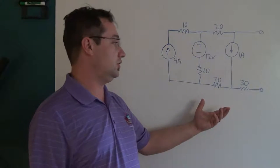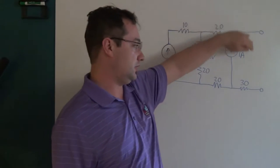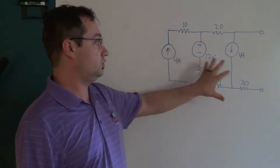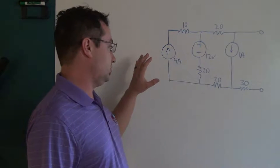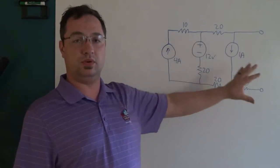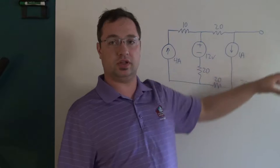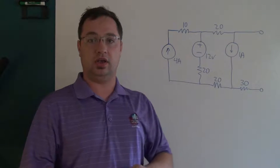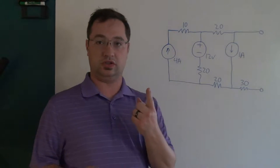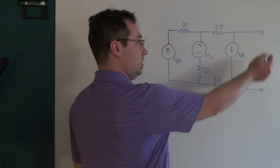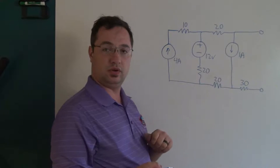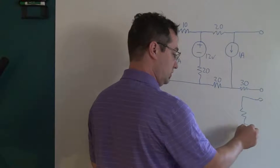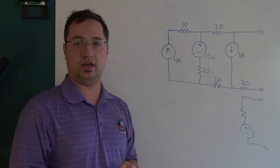Imagine that the circuit you see here is a two-port network — there's a black box that encompasses all of this, and these two ports are your output. This looks really complicated, and when you put this in a box, you may struggle to describe what the output looks like. Thevenin's theorem says that you can take something this complicated and simplify it down to two components: a resistor and an ideal voltage source. This two-port network could be described that simply.